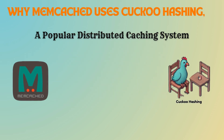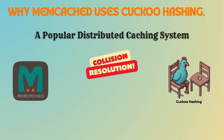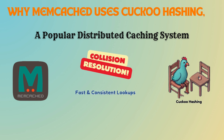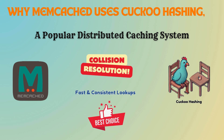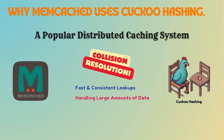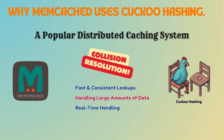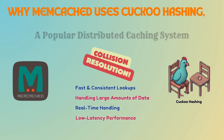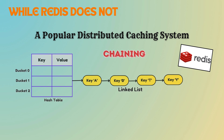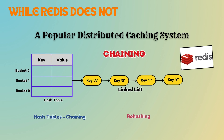Even though cuckoo hashing is highly efficient, Redis chose not to use it while memcached did. Memcached, a popular distributed caching system, uses cuckoo hashing to resolve collisions. Its need for fast and consistent lookups makes cuckoo hashing an ideal choice — memcached's use case involves handling large amounts of data in real time, making predictable O(1) lookups vital to maintain low-latency performance.